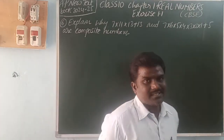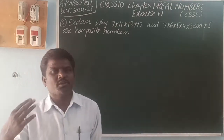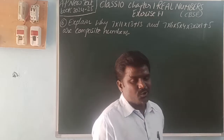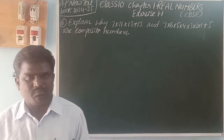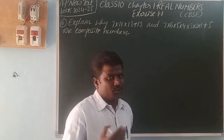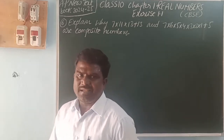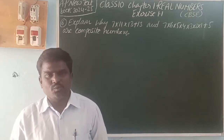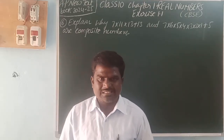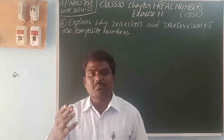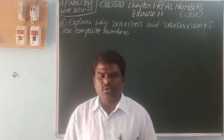So first, what is called a composite number? Composite number means a number having more than 2 factors — more than 1 and itself as factors. That number is called a composite number. For example, 4: the factors of 4 are 1, 2, 4. So 4 is called a composite number. 9 has factors 1, 3, 9. 12 has factors 1, 2, 3, 4, 6, 12.